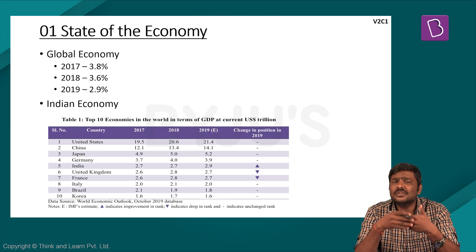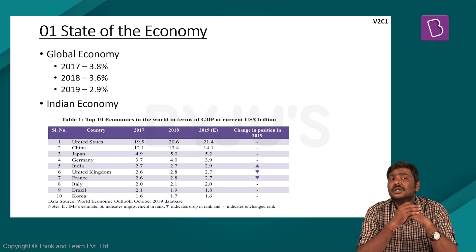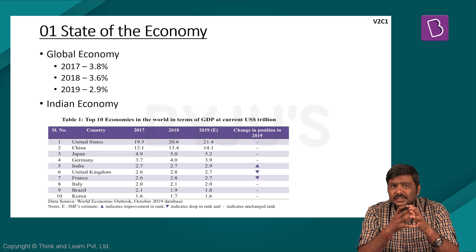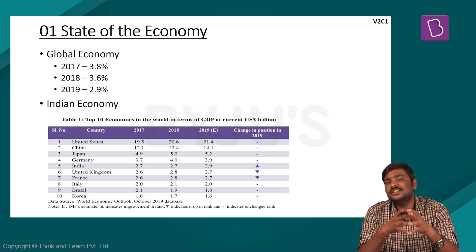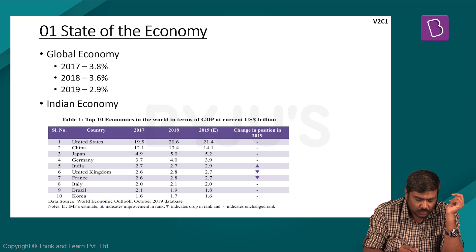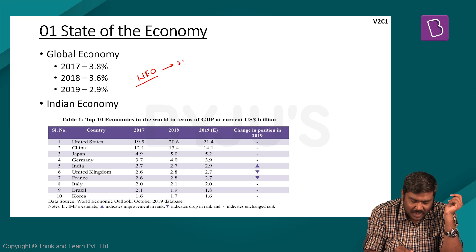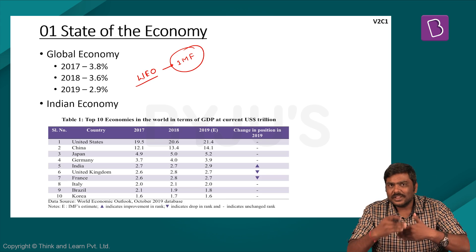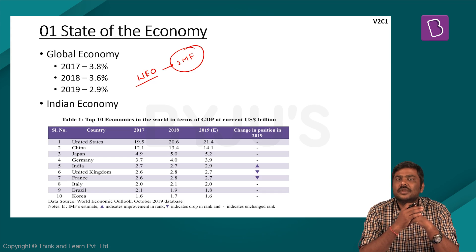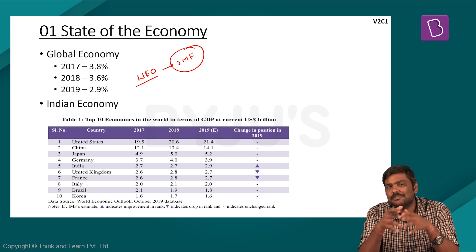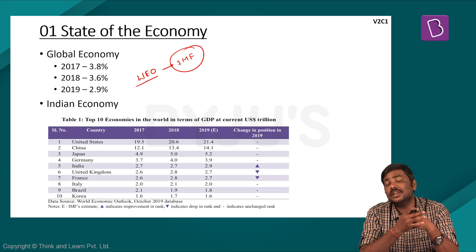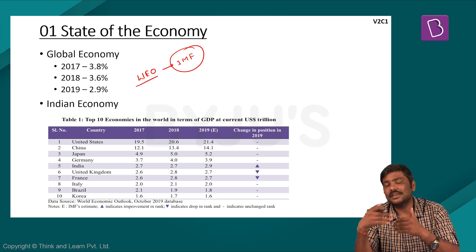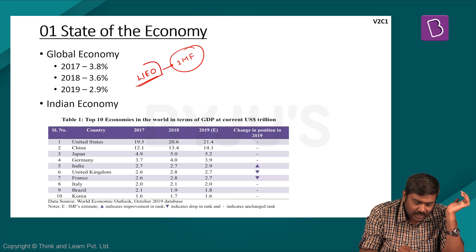The first chapter is based on the concept of the State of the Economy. This chapter is basically a summary of all the remaining chapters in the Economic Survey. One very important report discussed in this chapter is the World Economic Outlook, published by the IMF. Whenever I quote names of reports, please make a note of them, because UPSC Prelims has a trend of asking names of reports published by various international organizations.